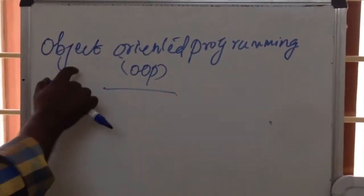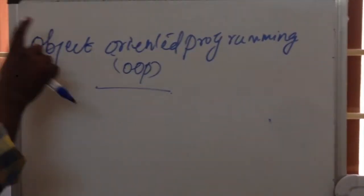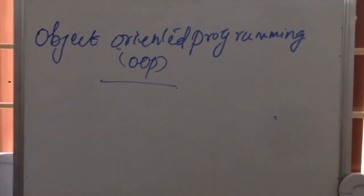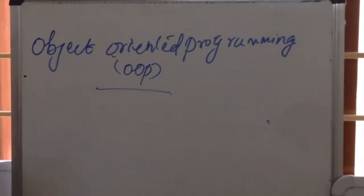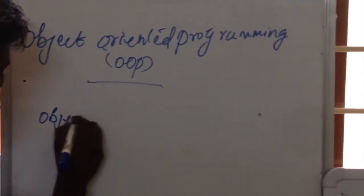But here, the main aspect of object-oriented programming, or OOP, is we can hide the data. There, the entire programming is divided into functions. Here, the entire programming is divided into objects.